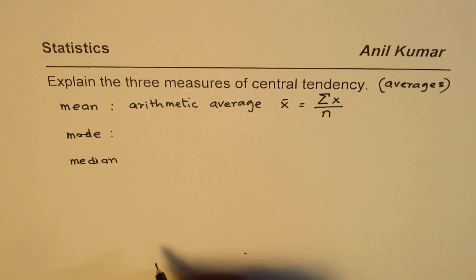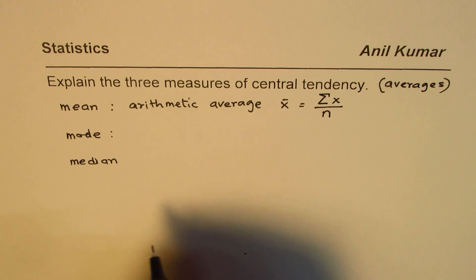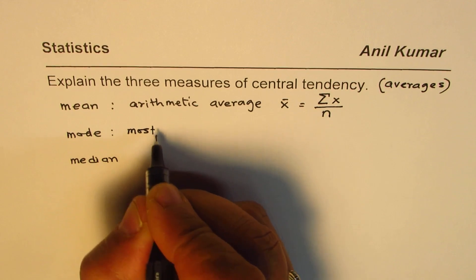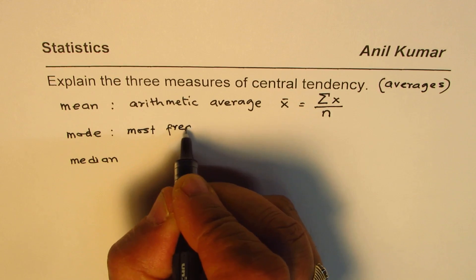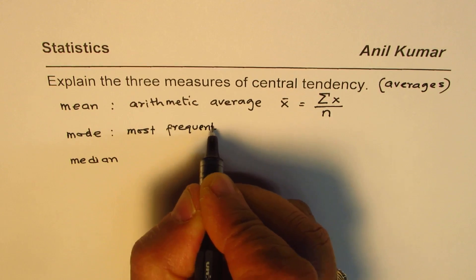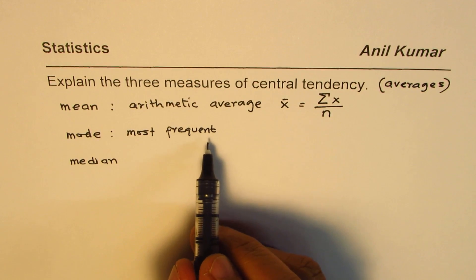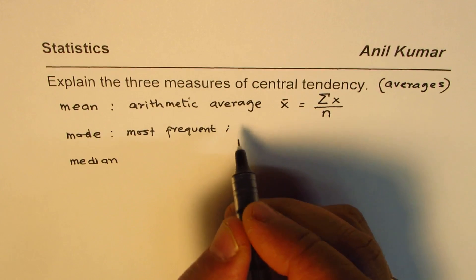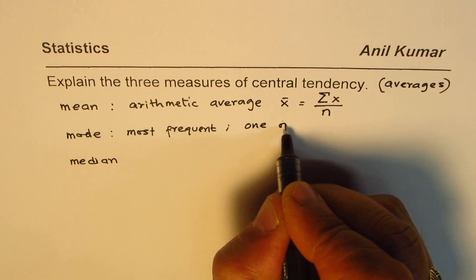Now what is mode? Mode is the most commonly occurring or most frequent value. It's important to note you could have one or more modes.